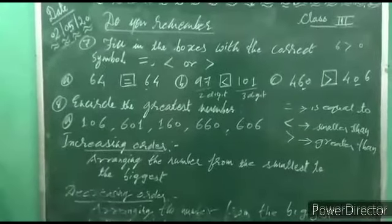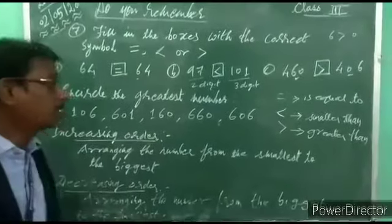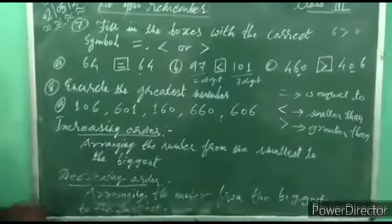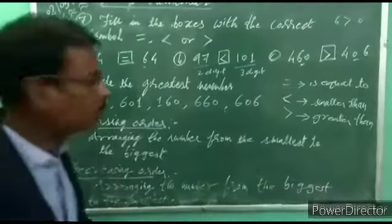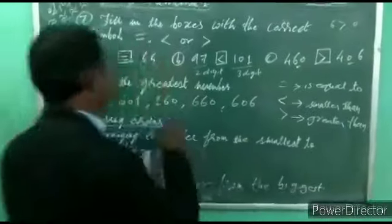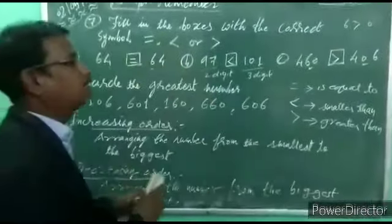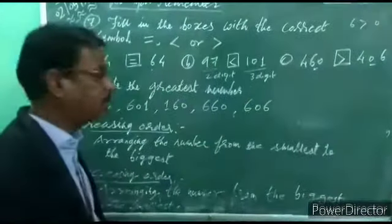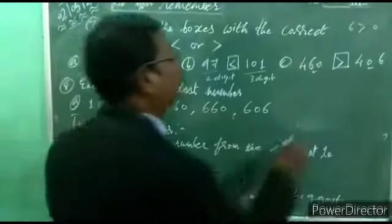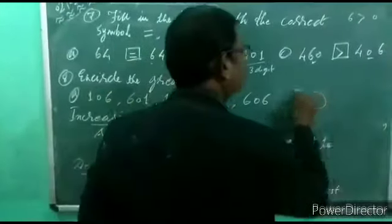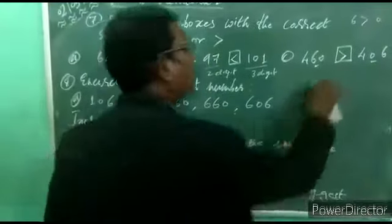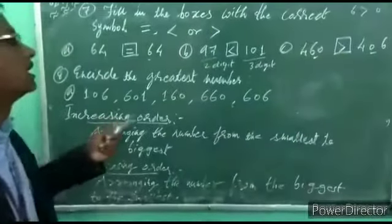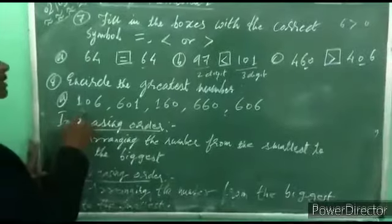Now, next question: question number 8A — encircle the greatest number. Encircle means we have to put a circle around it. Circle the greatest number, or encircle the greatest number.